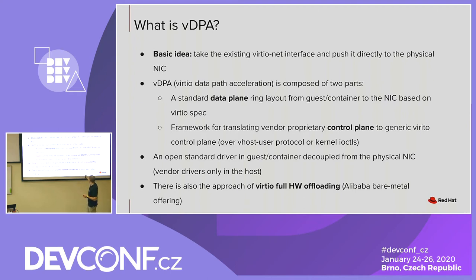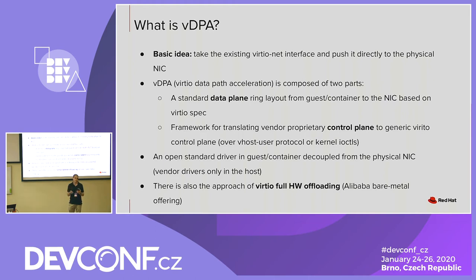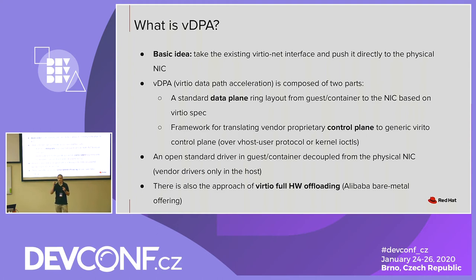The data plane is the standardized part — how buffers are arranged. VDPA assumes that NIC vendors implement the VirtIO data plane, which can be split-ring or packed-ring as defined in the VirtIO specification. Everything is open and standard. The control plane is different: VDPA does not assume NIC vendors implement the control plane inside the NIC. Instead, it provides a translation layer — a framework in the kernel or DPDK — where the vendor can push his drivers using a proprietary interface to talk with his physical NIC. The framework then translates that to something standard. This means we can have an open, standard VDPA driver inside your container image that is decoupled from the actual physical NIC.